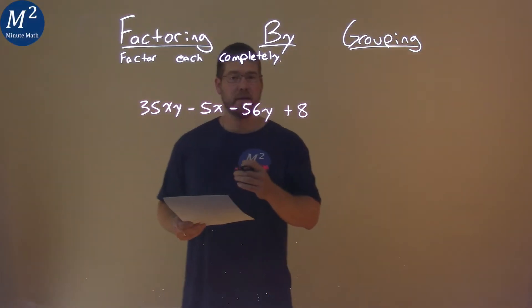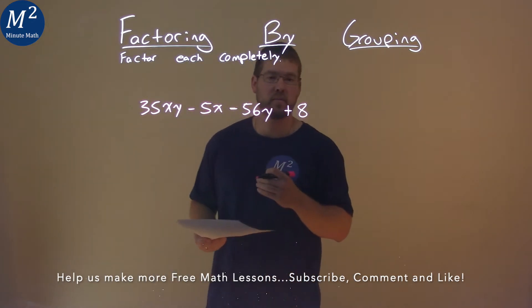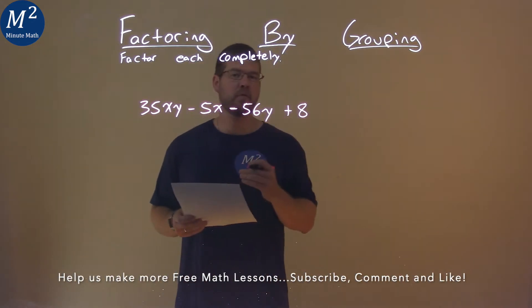We're given this problem right here: 35xy minus 5x minus 56y plus 8, and we need to factor this completely.